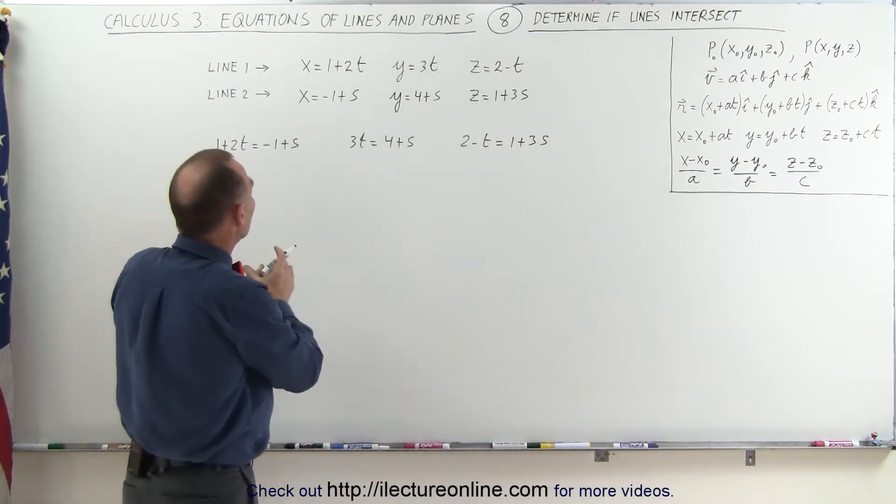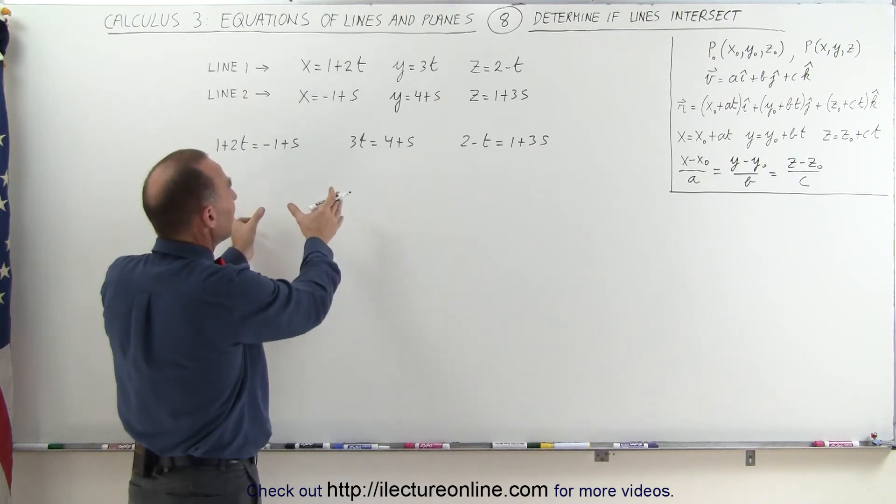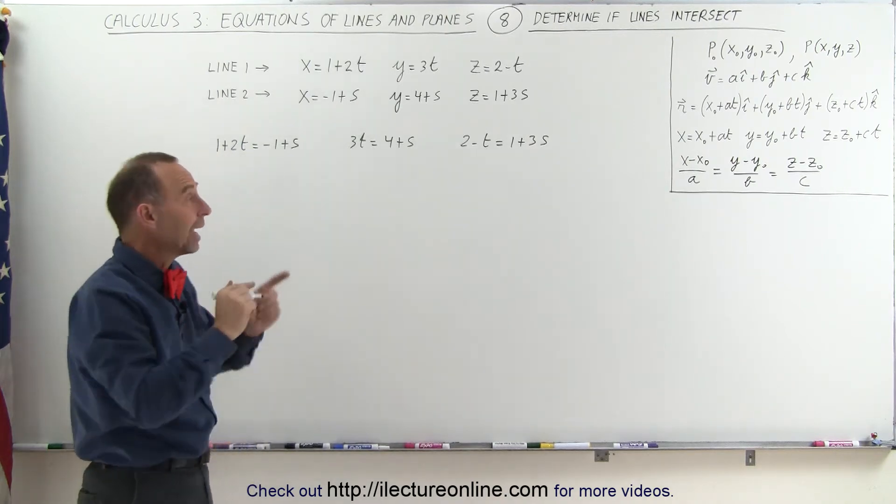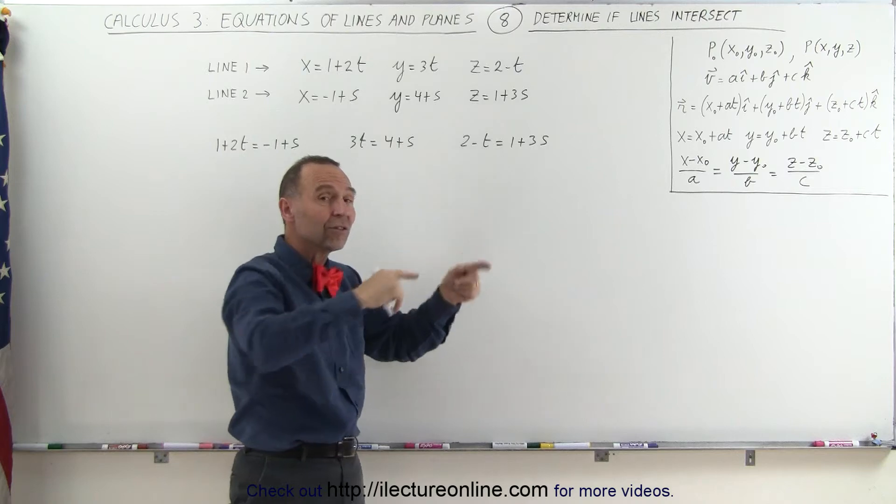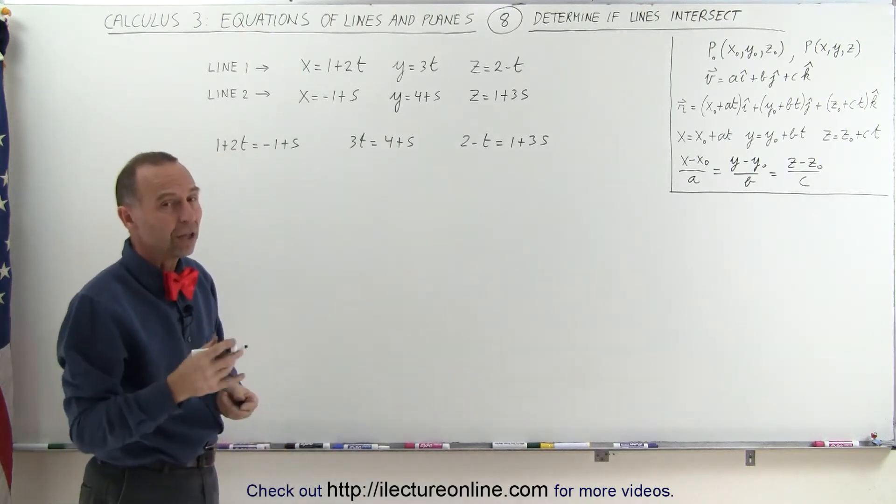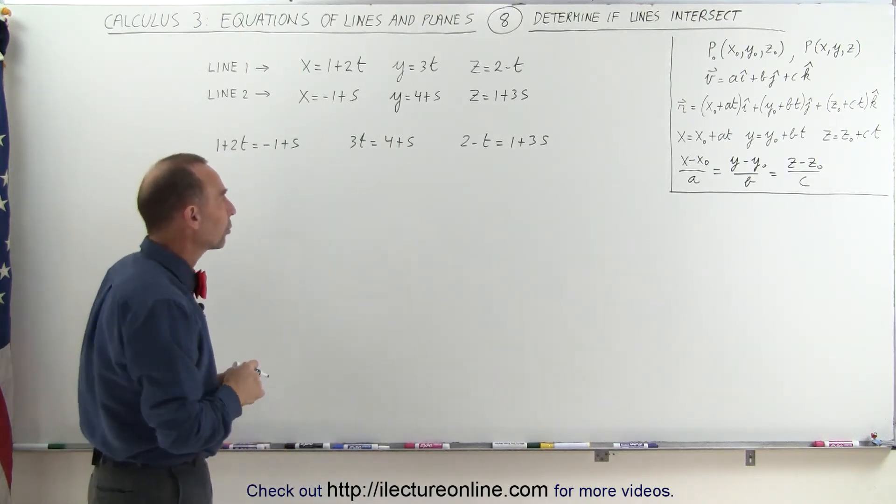Which means we're going to take two of these equations, solve them simultaneously, get a value for t and s, and then plug that into the third equation to see if that still holds true. If it does, then the two lines intersect one another.